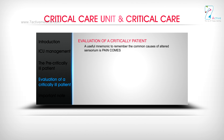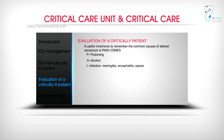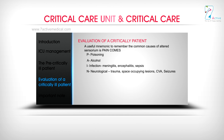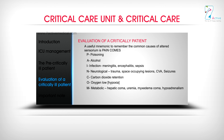A useful mnemonic for common causes of altered sensorium is PAIN COMES: P — Poisoning; A — Alcohol; I — Infection (meningitis, encephalitis, sepsis); N — Neurological (trauma, space-occupying lesions, CVA, seizures); C — Carbon dioxide retention; O — Oxygen low / hypoxia; M — Metabolic (hepatic coma, uremia, myxedema coma, hypoadrenalism); E — Electrolyte abnormalities; S — Sugar.